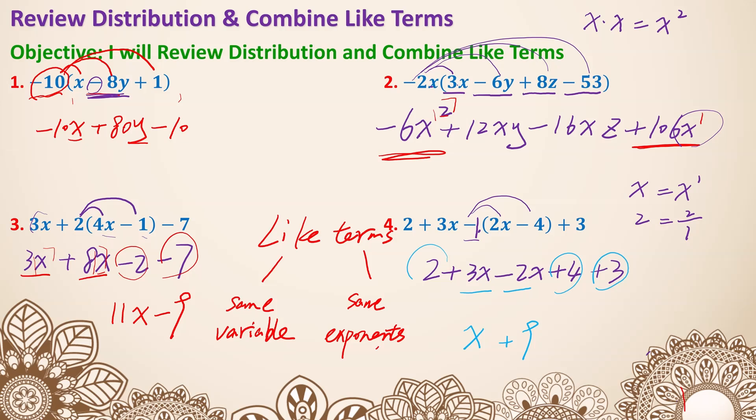The reason I'm putting the variable in the front is because that is called standard form. Standard form also requires us to put the exponents in descending order. So that is number 4.